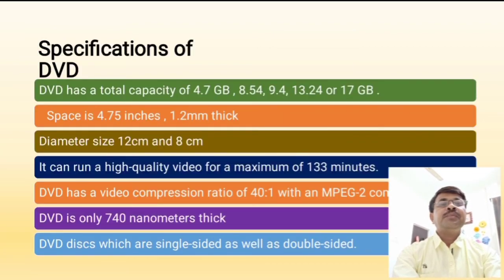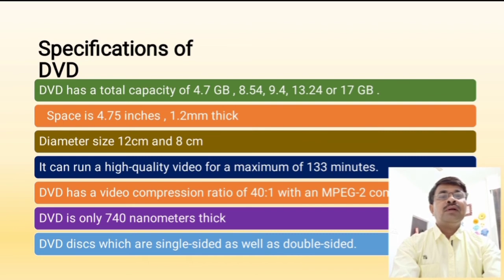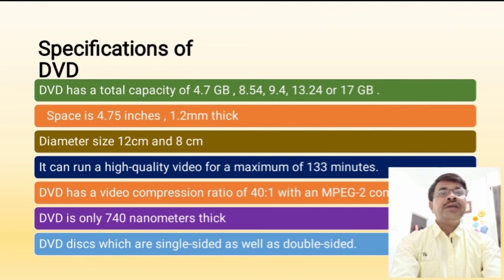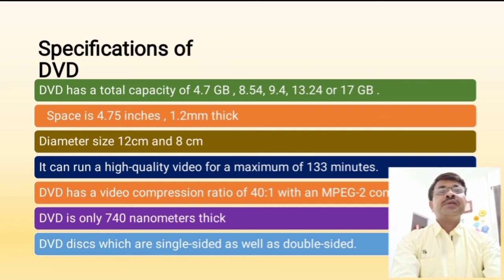Some important specifications of DVDs: DVD has an information storage capacity starting from 4.7 GB to a maximum of 17 GB, with a diameter size of 12 cm maximum to minimum 8 cm, and thickness of 1.2 mm. It can run maximum video up to 133 minutes. DVD uses video compression that is MPEG-2. A DVD disc can be single-sided as well as double-sided.